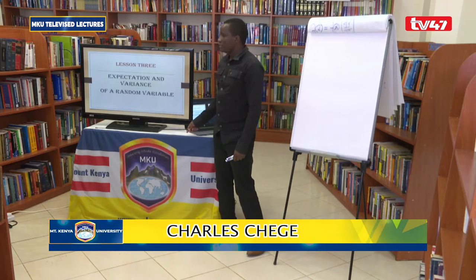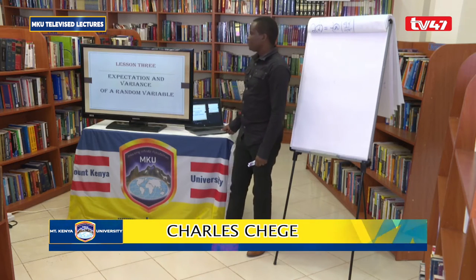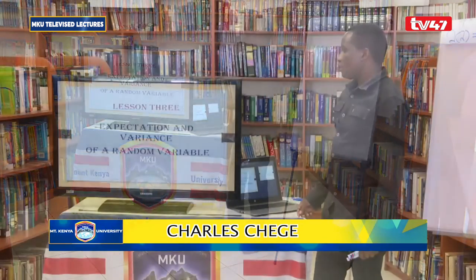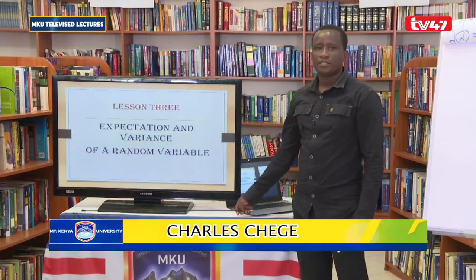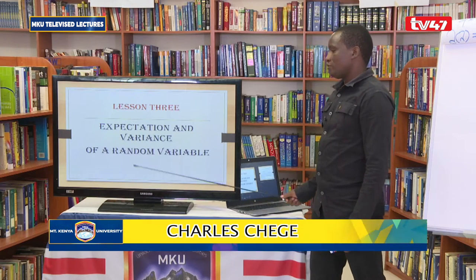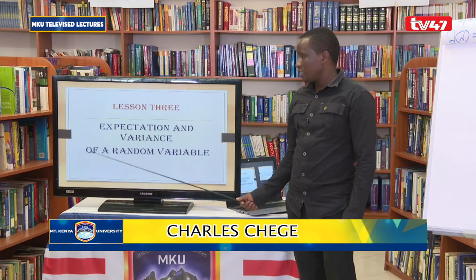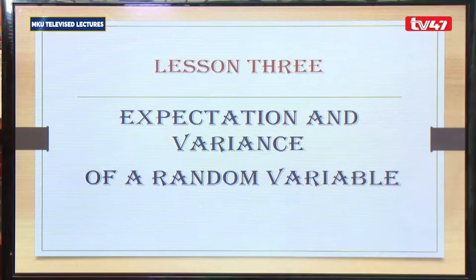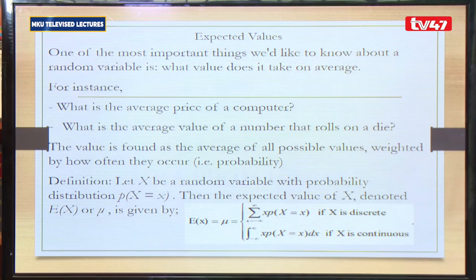Welcome back to lesson 3. We are going to look at expectation and variance of a random variable. These are properties that help us determine the average value that is going to be taken by the random variable and the spread of the observed values from some point of reference, like the mean itself. Starting with the expected value,